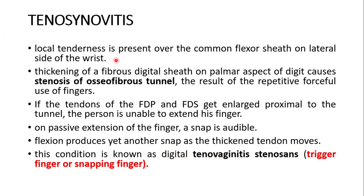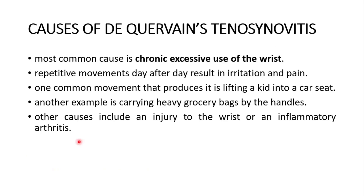These conditions are related: tenosynovitis, De Quervain's tenosynovitis, and trigger finger. There is a separate video on trigger finger with detailed images. The most common cause of De Quervain's tenosynovitis is chronic excessive use of the wrist. Repetitive movements day after day result in irritation and pain. One common movement that produces it is lifting a child into a car seat. Another example is carrying heavy grocery bags by the handles. Other causes include injury to the wrist or inflammatory arthritis.